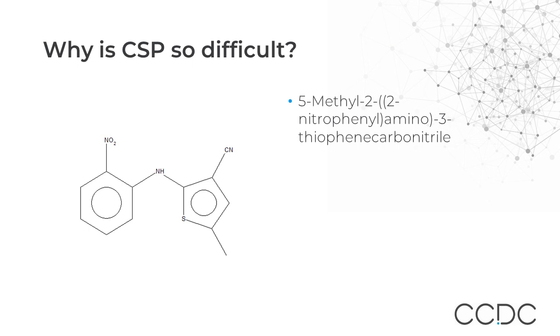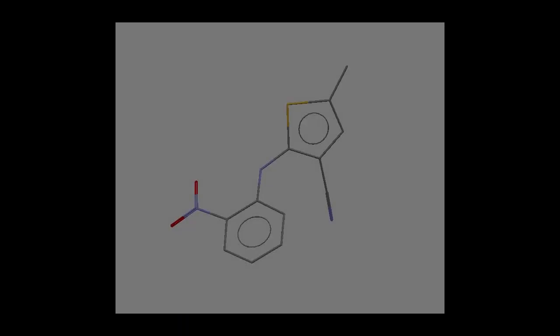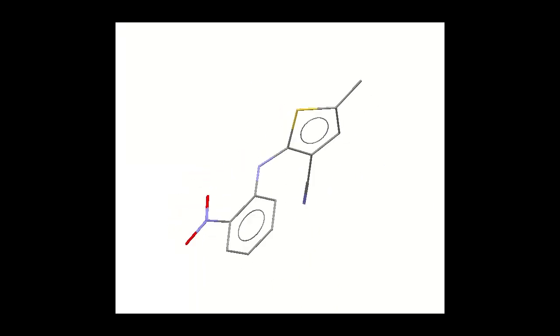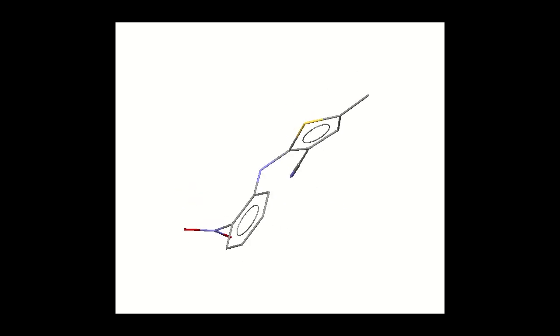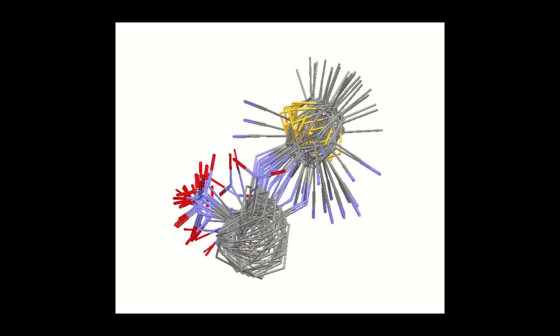Its chemical name is 5-methyl-2-(2-nitrophenyl-amino)-3-thiophene-carbonitrile. But that's a bit of a mouthful, and most people in the field of CSP just know it by its synonym, ROY. It doesn't on the face of it look so complicated to analyse, but the devil is in the detail. While the molecule ROY may seem quite simple, its molecular shape varies a lot, as can be seen from this movie, where the various plausible conformations of the molecule are shown in sequence.